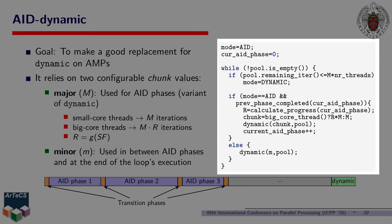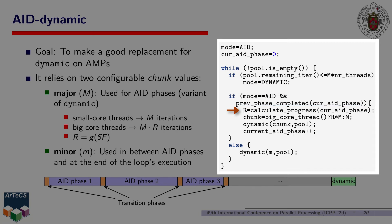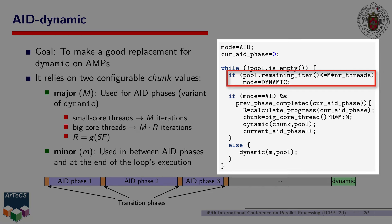This pseudocode listing describes how a worker thread behaves under AID-dynamic. The thread continuously removes iterations from the pool and executes them until the pool is empty. When in AID mode, which is active the vast majority of the loop's execution, the thread checks whether the remaining threads have already completed the previous AID phase. If that's the case, the runtime system calculates the R factor, which denotes the progress big core threads are making relative to small core threads. Based on this R factor and on the core type of the thread, the next chunk is selected and the thread proceeds to remove and execute the corresponding iterations. This process continues until a shortage of iterations is detected in the pool, at which point the dynamic scheduling method is engaged until the end of the loop's execution.